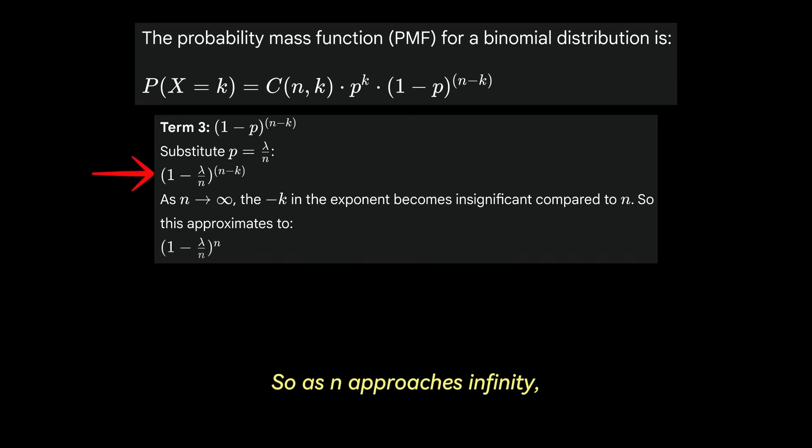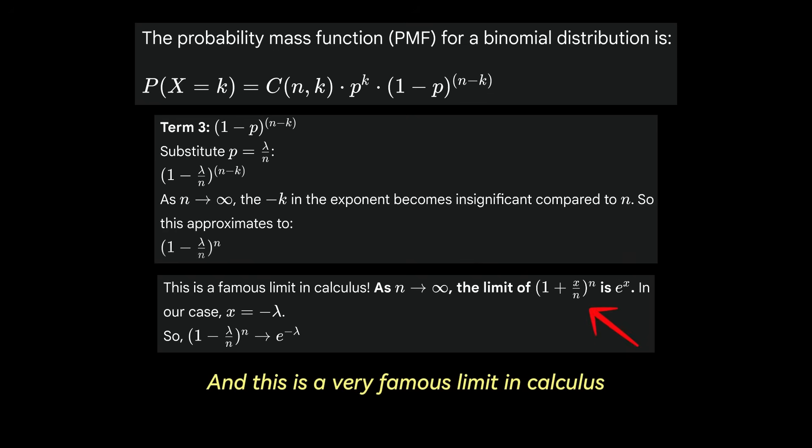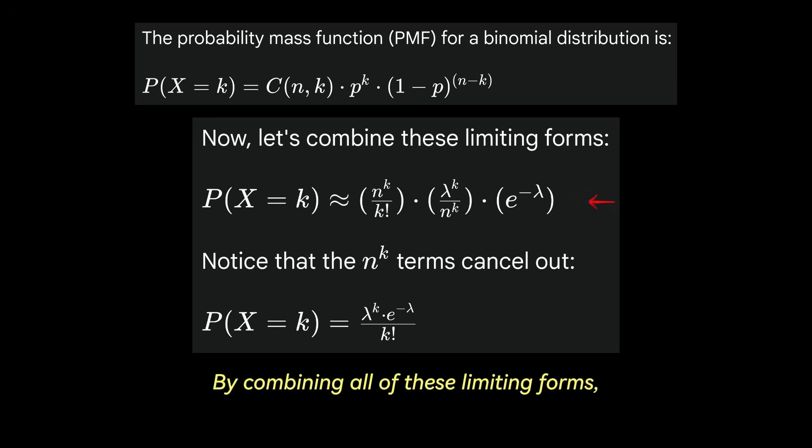Remember we have a large number of trials, so as n approaches infinity, the minus k in the exponent becomes insignificant compared to n. So this approximates to 1 minus lambda over n all to the power of n. And this is a very famous limit in calculus. As n approaches infinity, the limit of 1 plus x over n all to the power of n is e to the x, and in our case x equals minus lambda. So 1 minus lambda over n all to the power of n is equal to Euler's number to the minus lambda. By combining all of these limiting forms, we notice that the n to the k term cancels out, and we are left with… oh, that's the Poisson distribution formula.